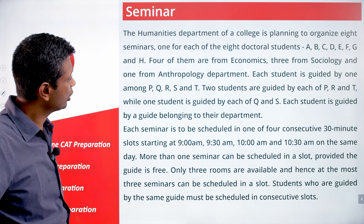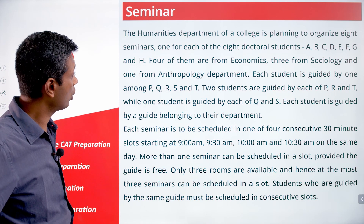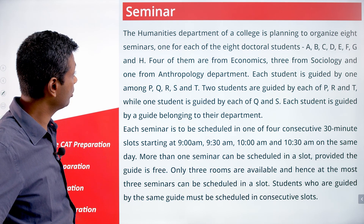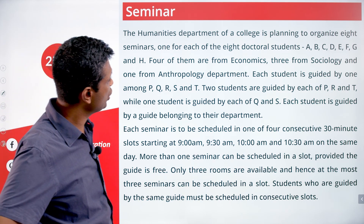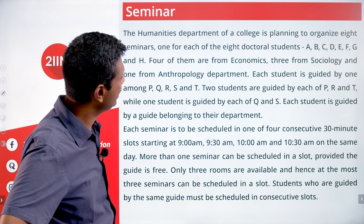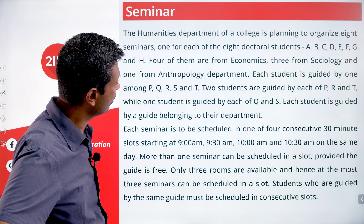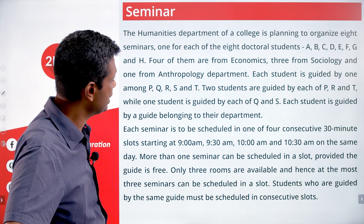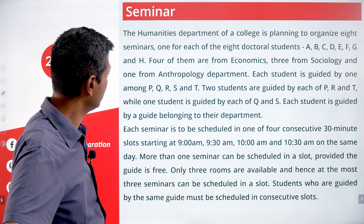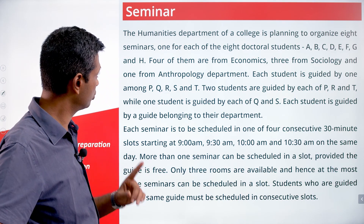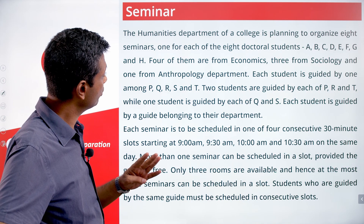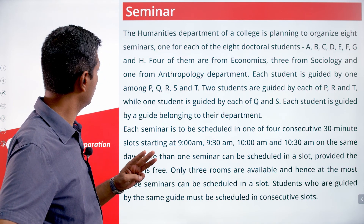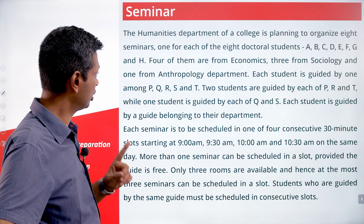Seminar. The humanities department of a college is planning to organize eight seminars, one for each of the eight doctoral students: A, B, C, D, E, F, G, and H. Four are from economics, three from sociology, and one from anthropology.